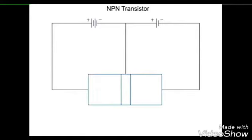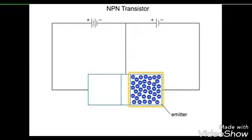It consists of three regions. It has a heavily doped region of N-type material called the emitter. The emitter is very rich in free electrons.